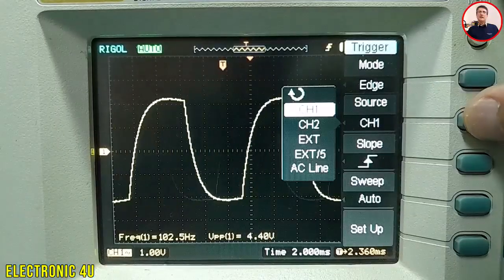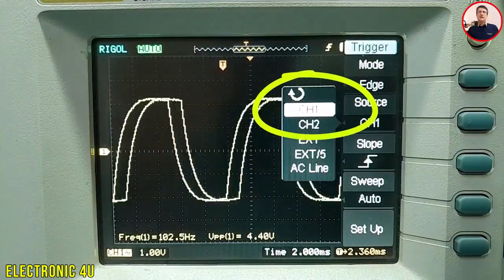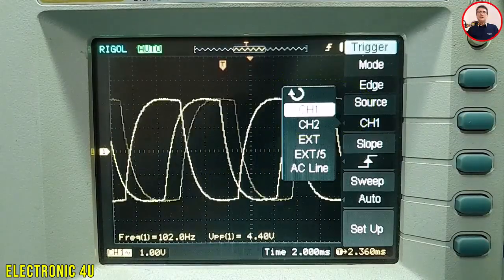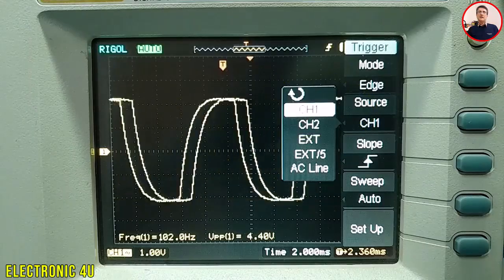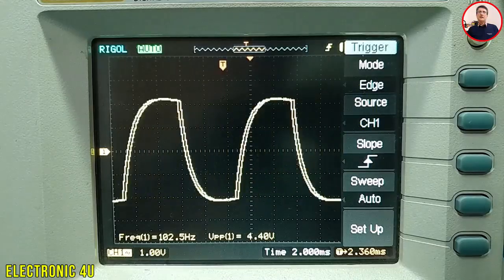Now, let's look at the oscilloscope screen. Right now, the trigger source is set to channel 1. As you can see, the waveform isn't very stable. That's because the oscilloscope is trying to find a consistent trigger point on this charging curve, which is difficult.